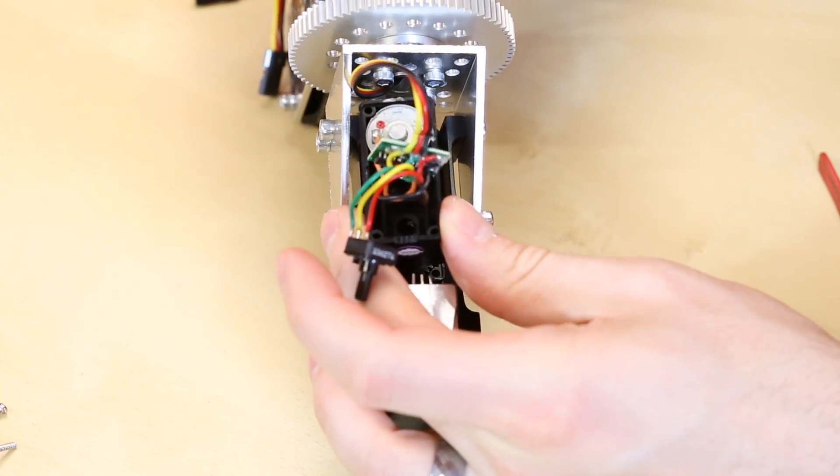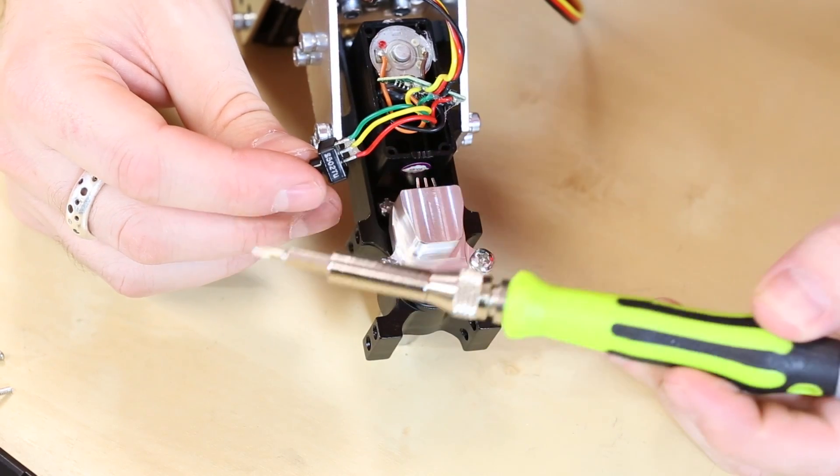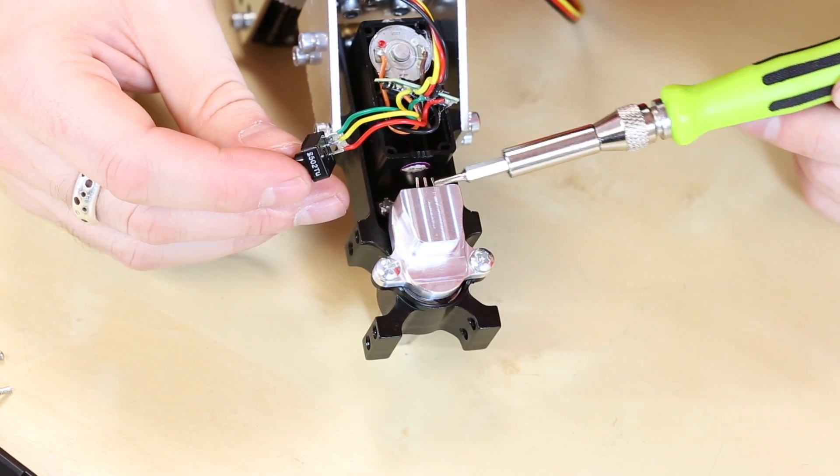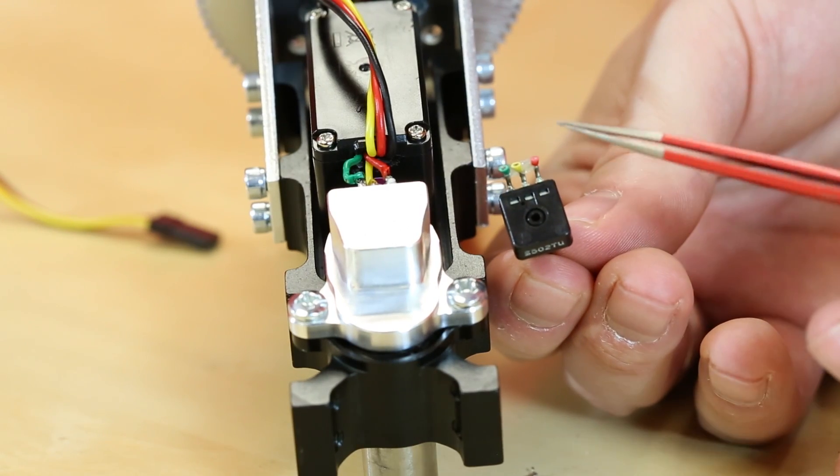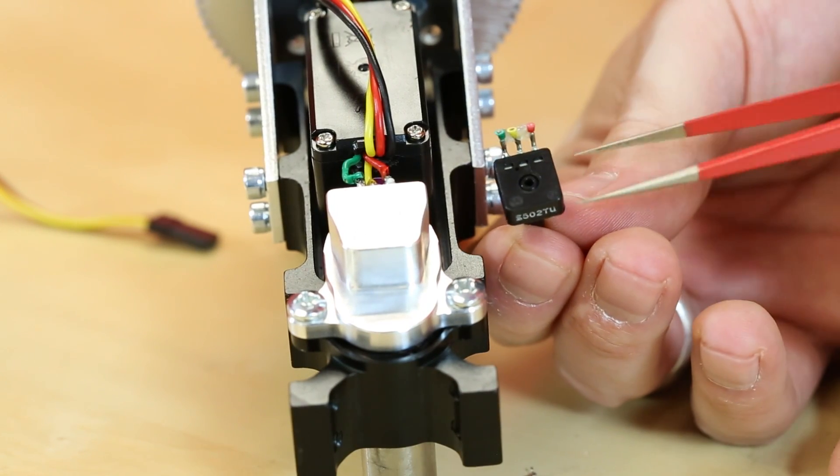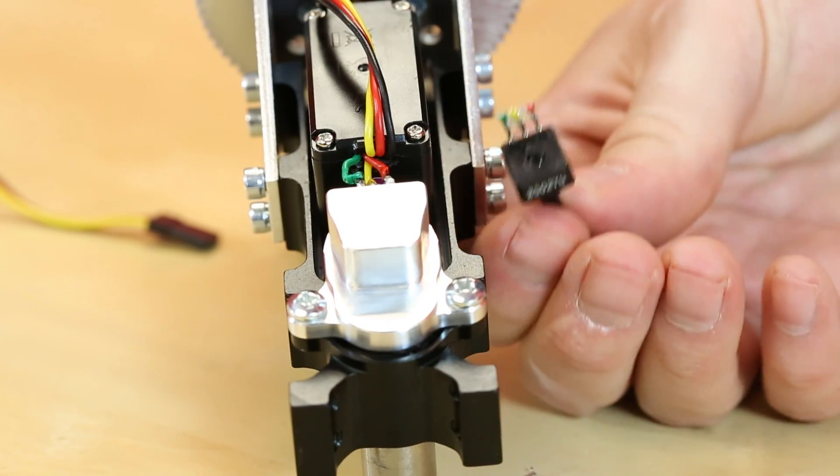And now the housing goes back on top. Now we need to disconnect these wires, disconnect this potentiometer and connect the wires onto this new potentiometer. We just need to make sure that the wires are connected in the same order that they were for the original potentiometer.